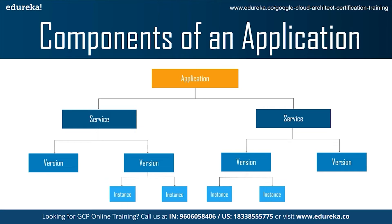Each service in App Engine consists of the source code from your app and the corresponding App Engine configuration files. The set of files that you deploy to your service represent a single version of that service. Each time that you deploy to that service, you are creating additional versions within that same service. Having multiple versions allows you to quickly switch between different versions of the app for rollbacks, testing or other temporary events. You can route traffic to one or more specific versions of your app by migrating or splitting traffic.